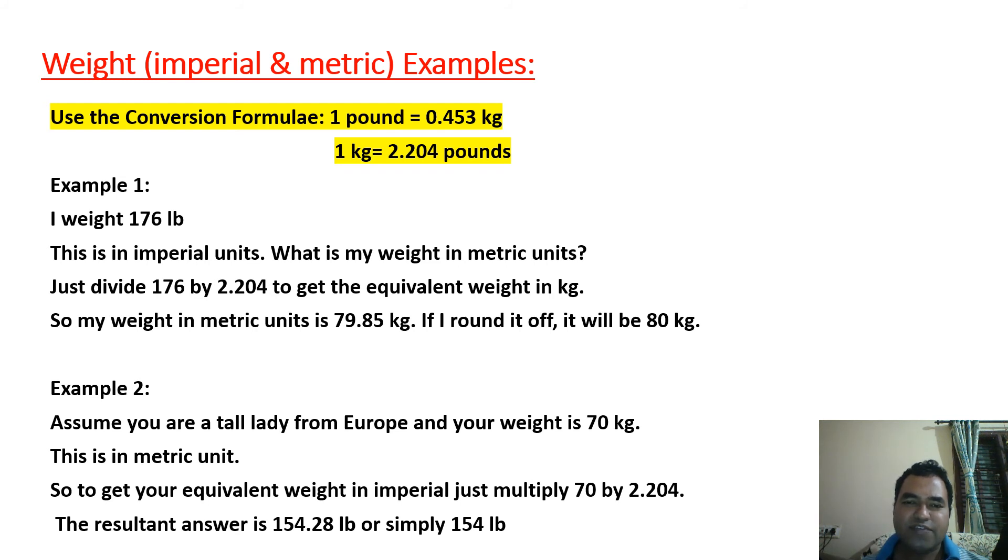Similarly if a person weighs 70 kilograms the equivalent weight in imperial can be got by just multiplying 70 by 2.204 which will be 154.28 pounds or simply 154 pounds.